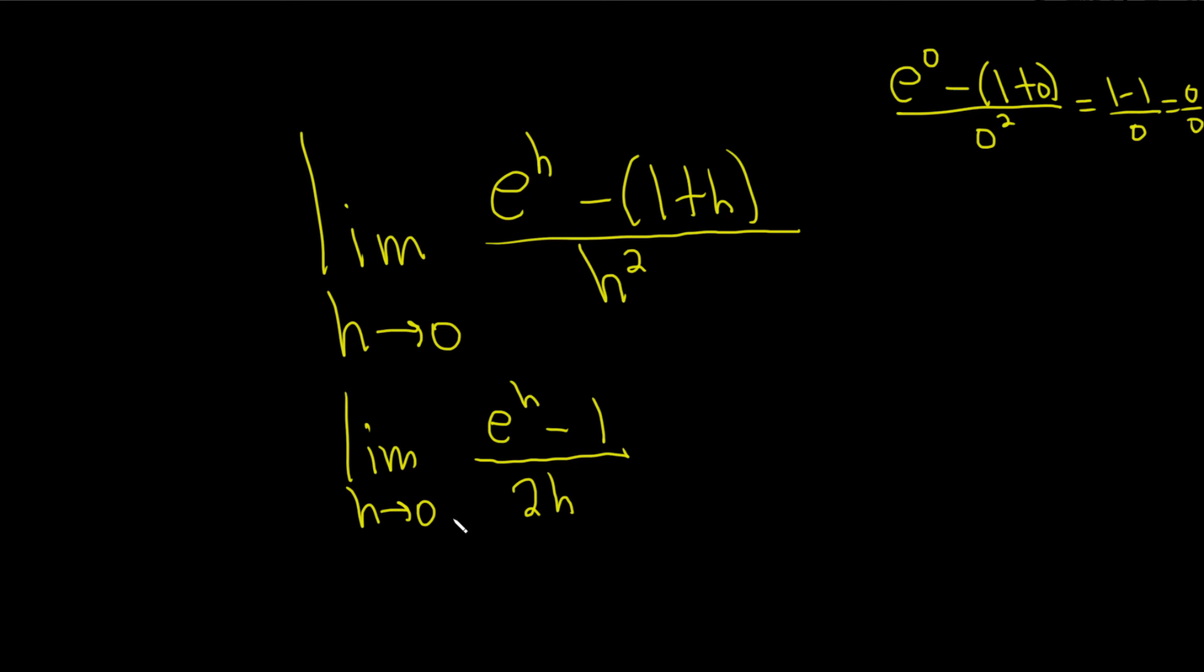Let's see what's going on. If you plug in 0, you get e to the 0 minus 1 over 2 times 0. e to the 0 is 1, so you get 1 minus 1 over 0, so you get 0 over 0.